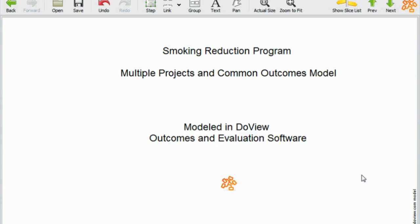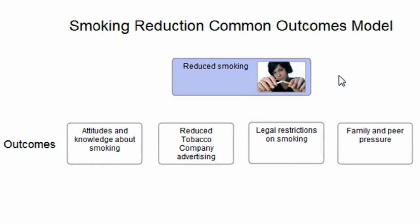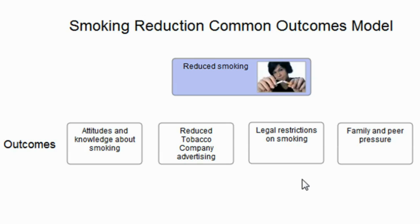I want to turn now to a DoView outcomes and evaluation software model which illustrates this. This is a very simple one done for the purpose of illustration and it's in the smoking area — reduce smoking, as you can see. Beneath that there are four lower-level steps which are thought to lead to reduced smoking: attitudes and knowledge about smoking, reduced tobacco company advertising, legal restrictions on smoking, and family and peer pressure.